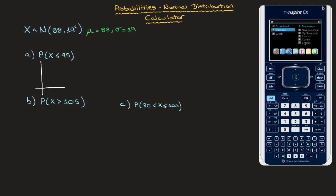Let me quickly sketch a bell curve. I have a vertical axis, a horizontal axis, and a bell curve. In the middle on the x-axis I add the mean, mu, which equals 88. Since we're interested in the probability that X be less than or equal to 95, we find 95 on the x-axis — roughly here, added in green. That area would be all of the area to the left of 95.